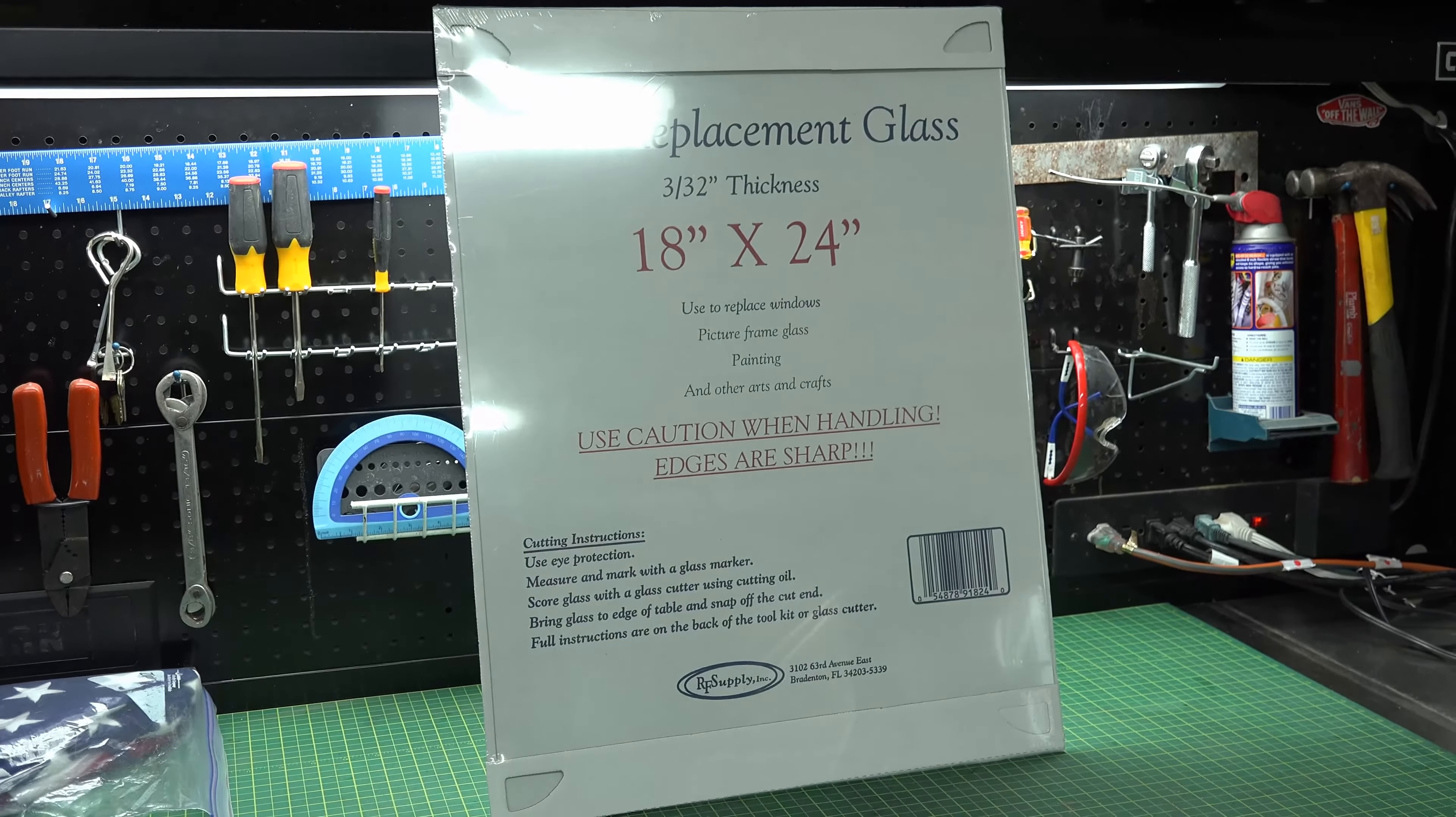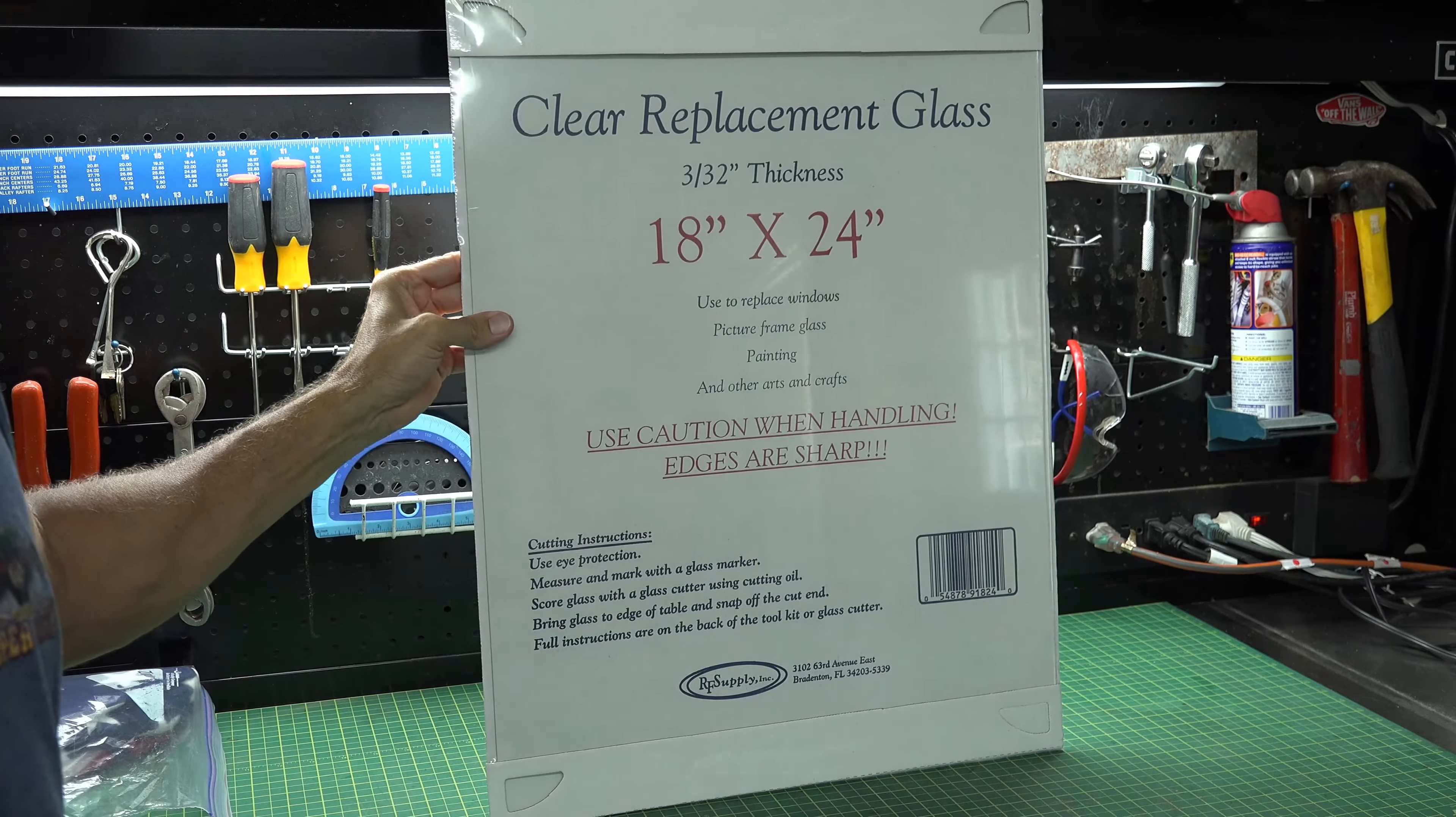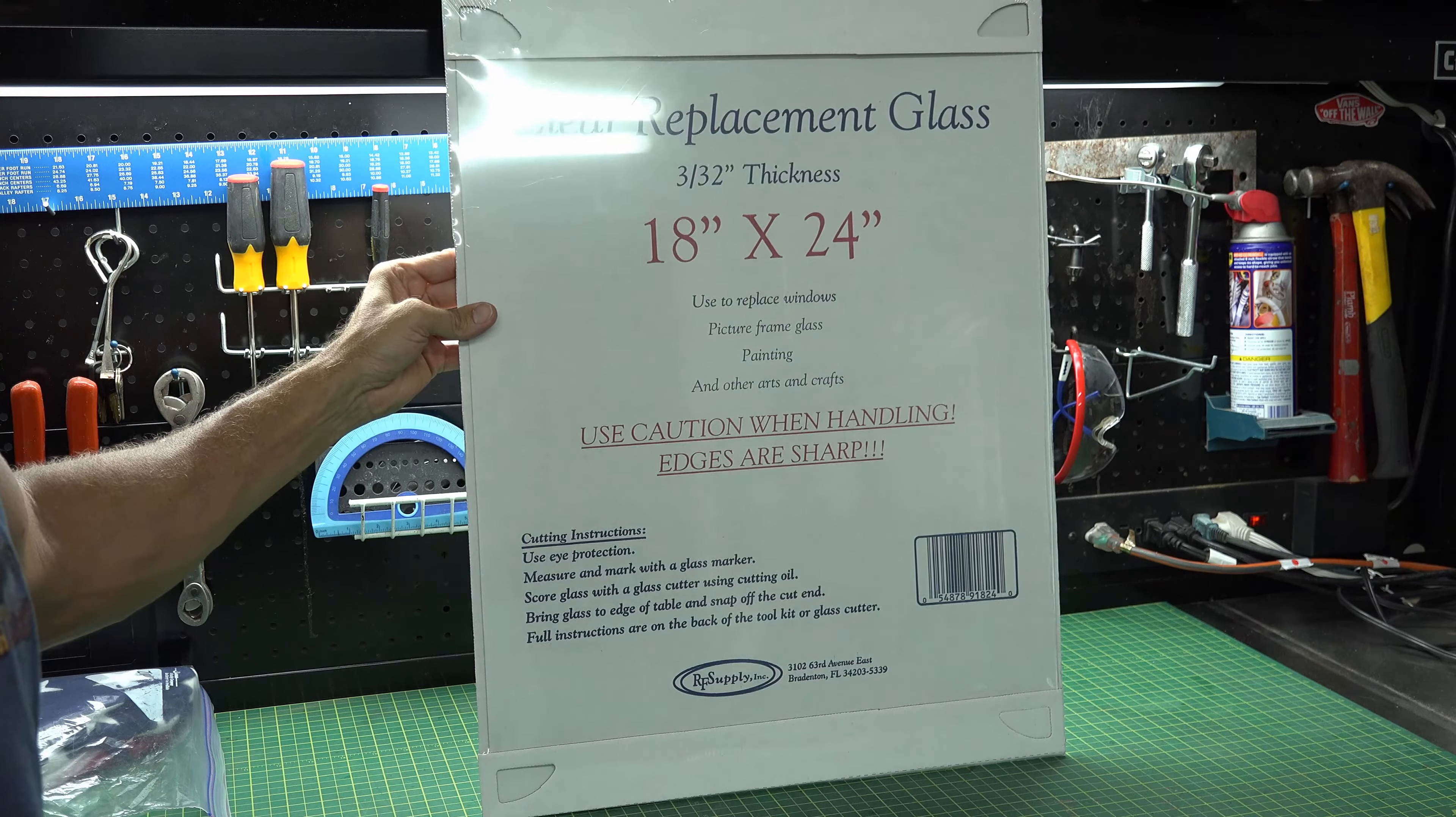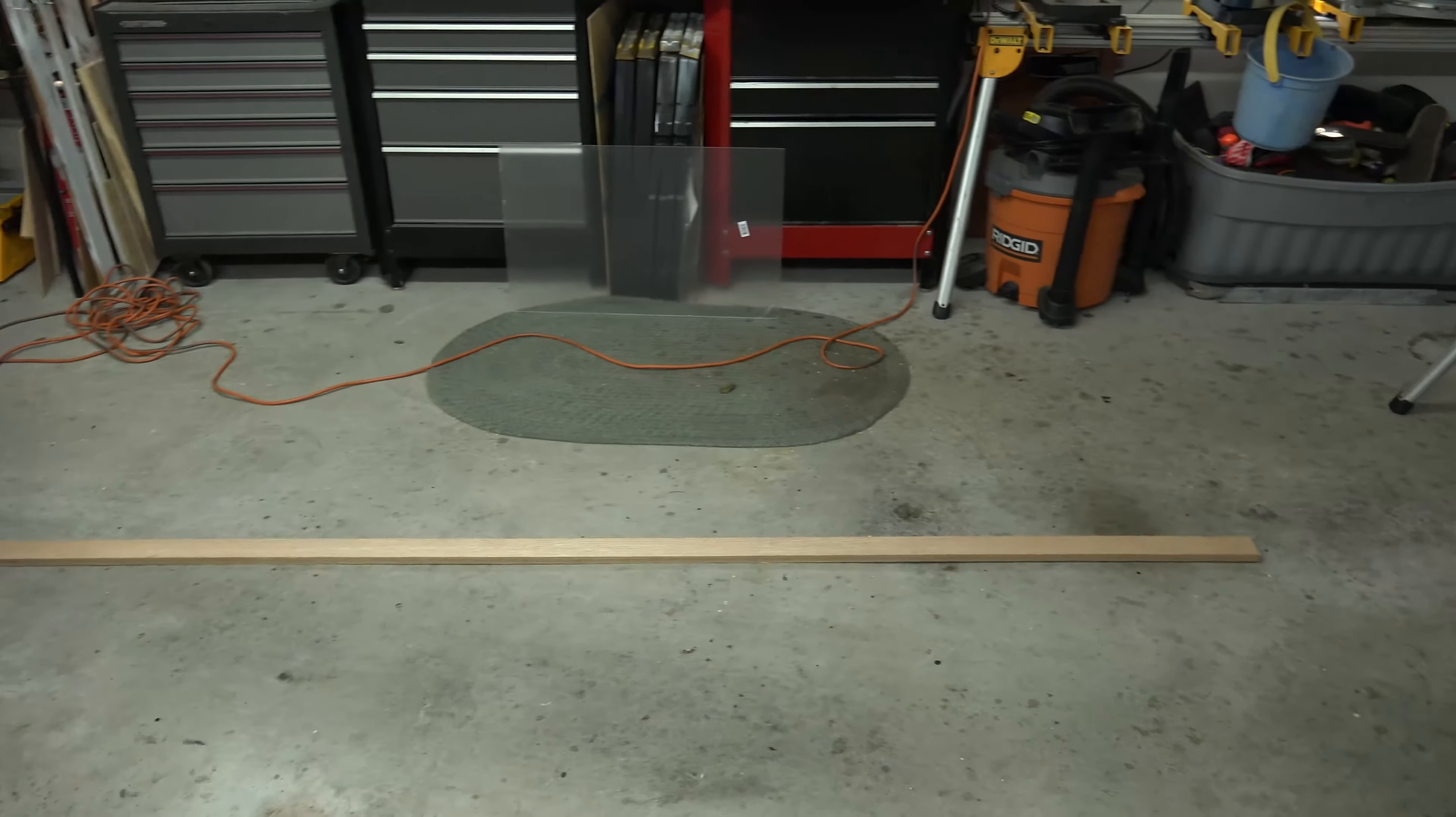Okay, so here's the glass we're going to be working with. It's 18 by 24, so those will be the dimensions of your shadow box. So let's get started. I purchased an eight foot long piece of oak wood and this will be enough to complete the entire box.